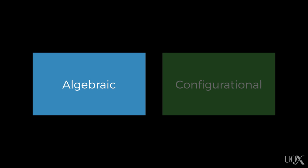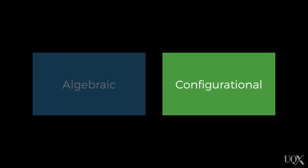Originally there were two main models, or theories, for how we form impressions: the algebraic models and the configurational model. Let's talk about the algebraic models first.